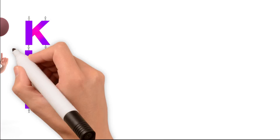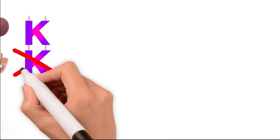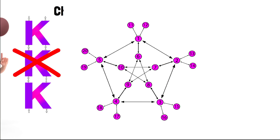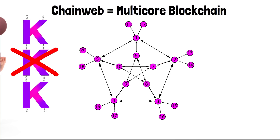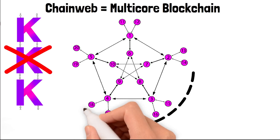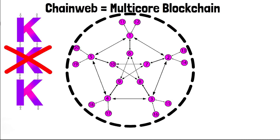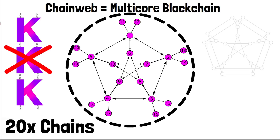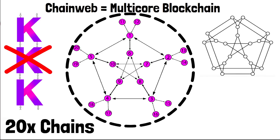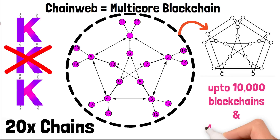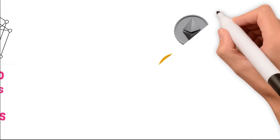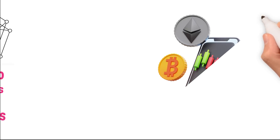The first thing to understand is that Kadena is not a blockchain — Kadena is a network, and ChainWeb is the multi-core blockchain. That means ChainWeb is not a single-chain blockchain. The Kadena blockchain is 20 chains all connected together, with the ability to scale up to a thousand blockchains or more.